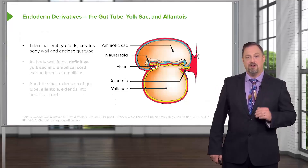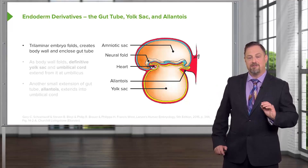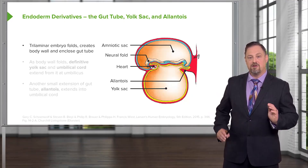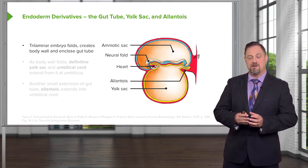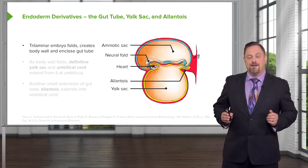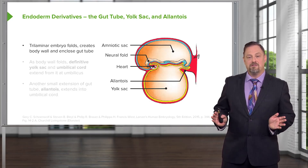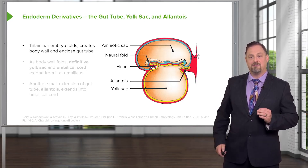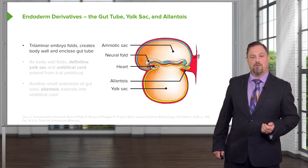Let's begin by returning to an earlier stage of development, around about the trilaminar embryo stage, as neurulation is occurring. As the neural folds are moving in to create the central nervous system, the splanchnopleure and its underlying endoderm are folding together to create a gut tube, and in the process extend the yolk sac off of and out of the body wall.